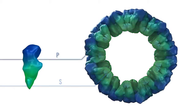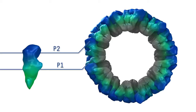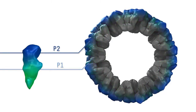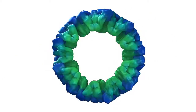Likewise, the protruding region called P consists of the combined protruding domains of all the monomers. The P domain is subdivided into two subdomains, P1 and P2, with P2 being the outermost subdomain.